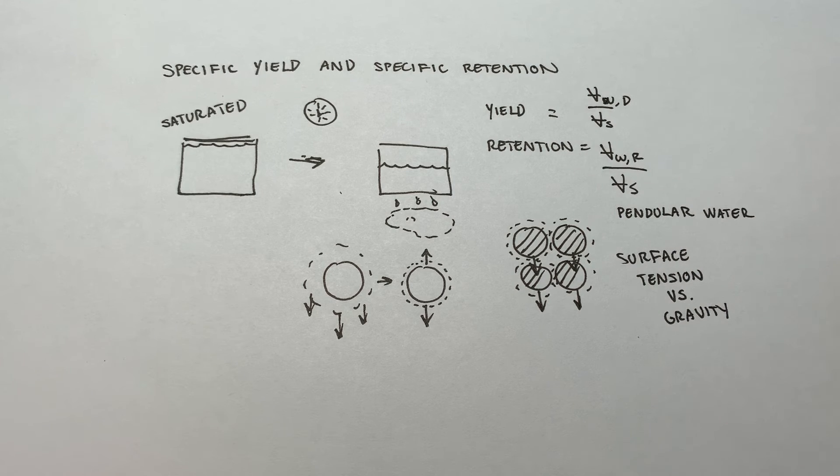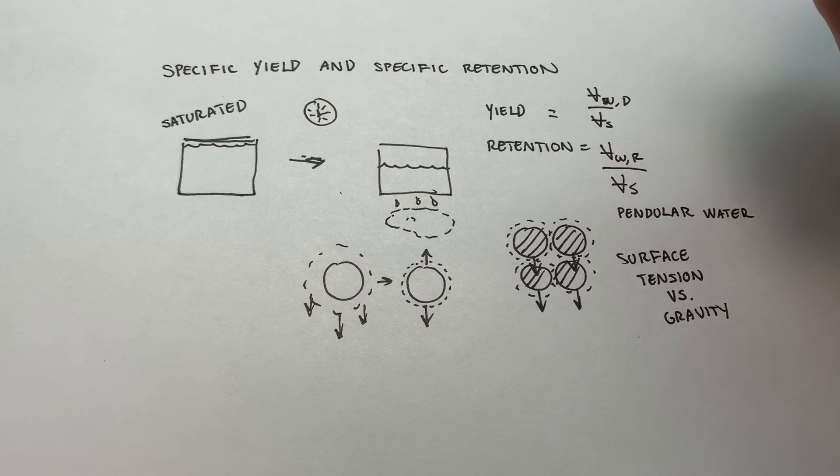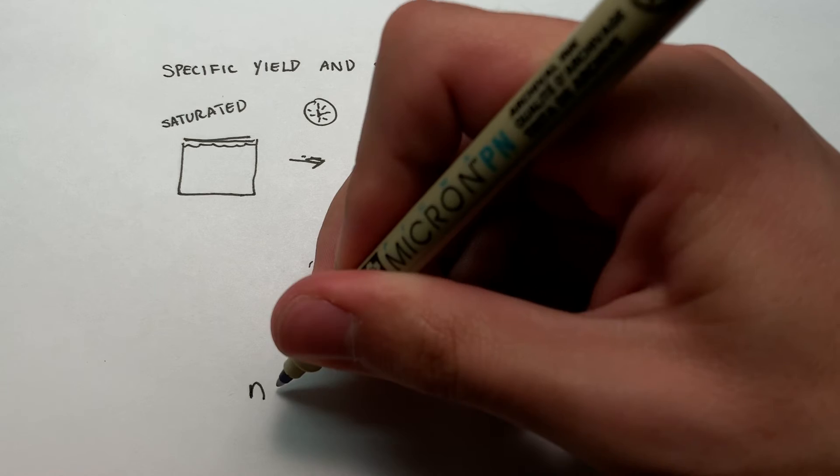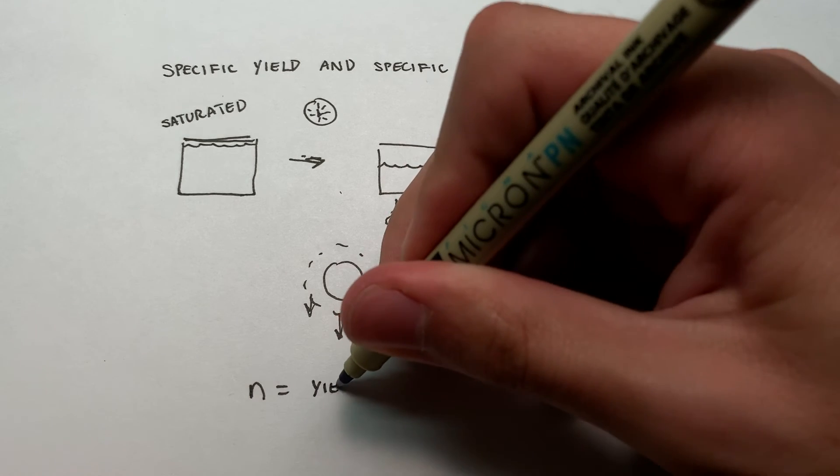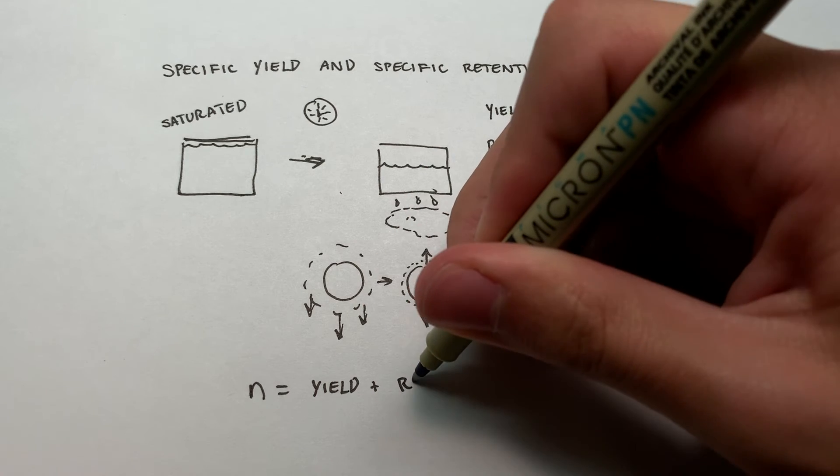Now, as a final note here, I'll say that I mentioned at the beginning that porosity was related to these two terms. And the relation we have for that is n, you'll remember that's porosity, is equal to the sum of the specific yield and the specific retention.